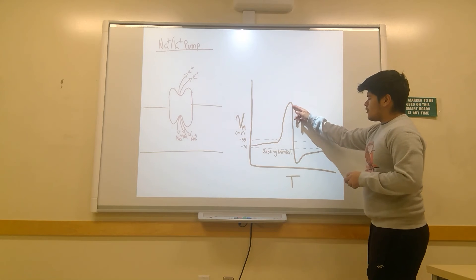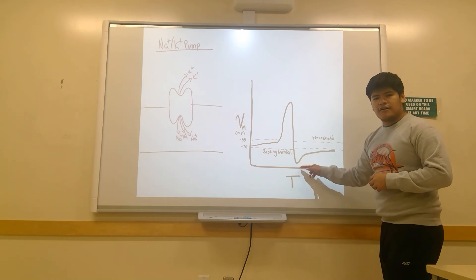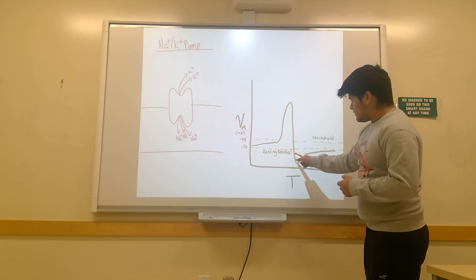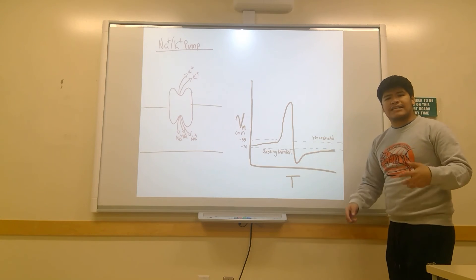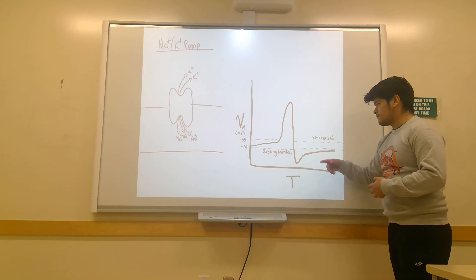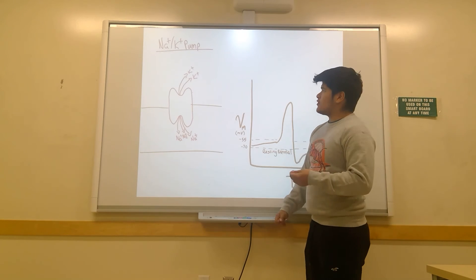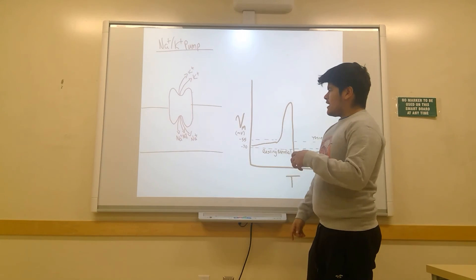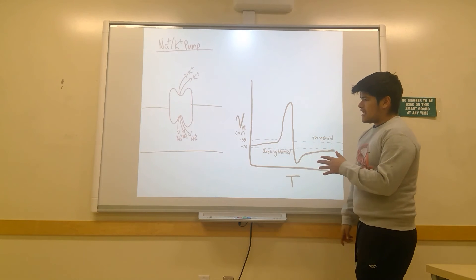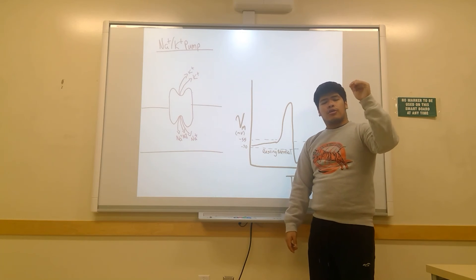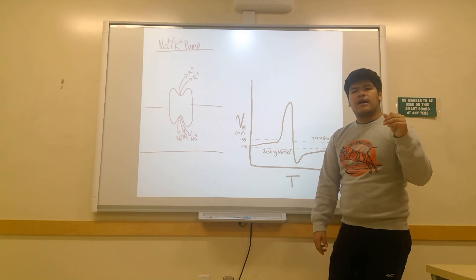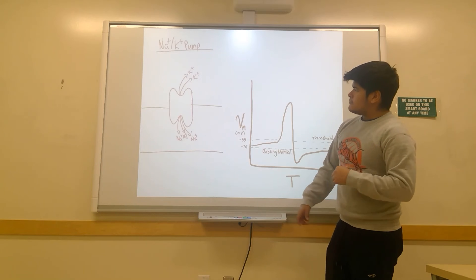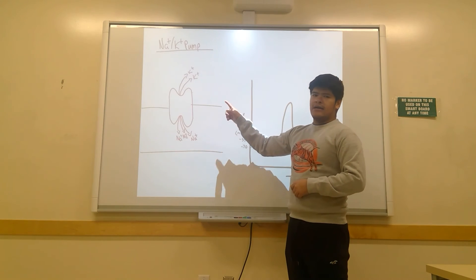As mentioned before, there is a hyperpolarization of these neurons after an action potential is fired. This has to be restored to its resting state, to the resting potential. The way this is done is with sodium-potassium pumps, which are shown right here. What they do is they pump in three sodium ions, and for every three sodium ions, two potassium ions go out.